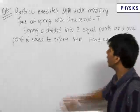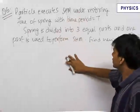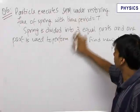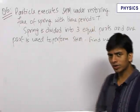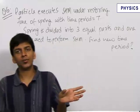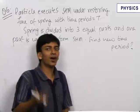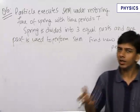Here is a simple question. A particle executes SHM under restoring force of a spring with time period equal to T. The spring is cut into three equal parts and one part is used to perform another SHM. We need to find the new time period.